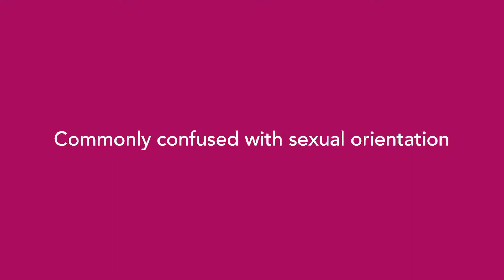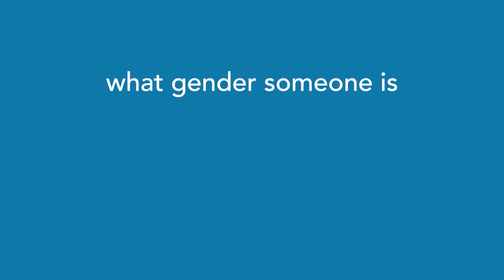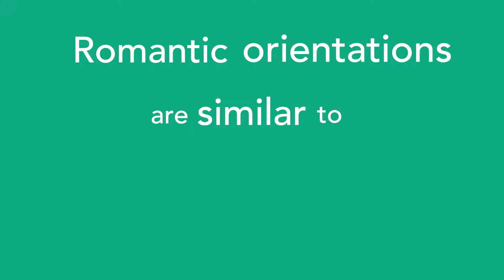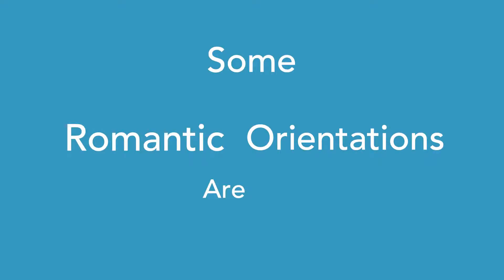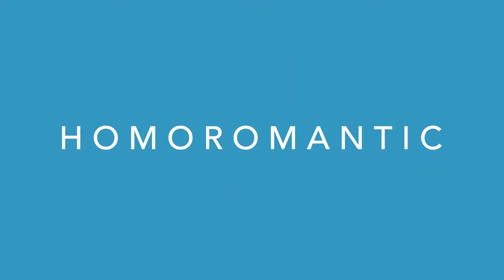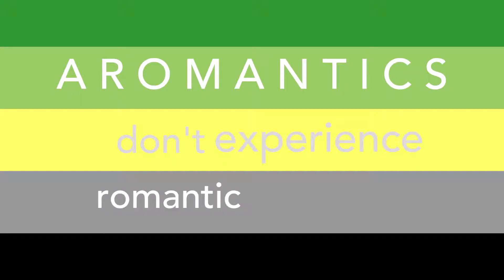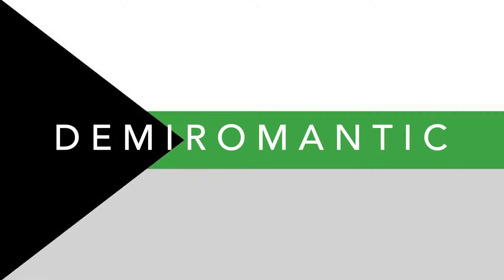Finally, we have romantic orientation, which is commonly confused with sexual orientation. Romantic orientation is what gender someone is romantically attracted to. Some romantic orientations are heteroromantic, homoromantic, biromantic, and panromantic. There is also an aromantic spectrum. Aromantics don't experience romantic attraction. Like the asexual spectrum, there is demiromantic and gray romantic.